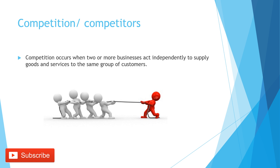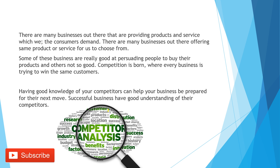We will begin the lesson by understanding what competition or competitors means. Competition occurs when two or more businesses act independently to supply goods and services to the same group of customers. Different businesses try to win the same group of customers — these businesses have the same or similar products and try different tactics to win customers. This is what the competitive environment means, and those competing against each other are competitors to one another.